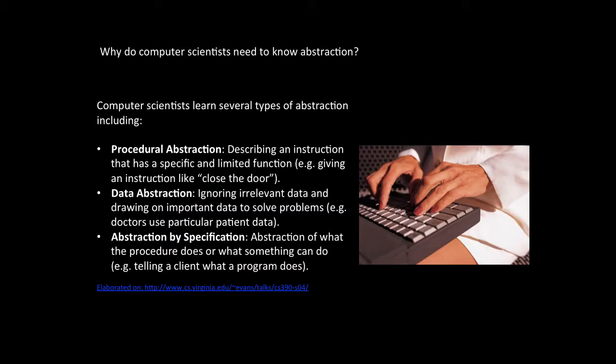How is abstraction relevant to computer science, you might ask? Well, there are different types of abstraction, but some examples that computer scientists might use which are relevant to digital technologies as a learning area might involve some of these. For example, we have procedural abstraction, which is the ability to describe an instruction that has a specific and limited function, such as giving an instruction like closing the door or asking students to paste a page in their book.